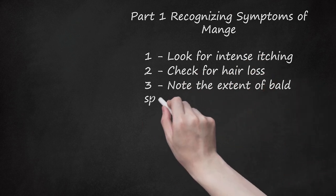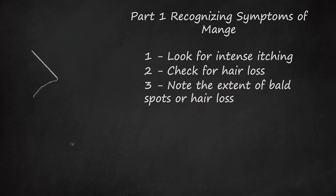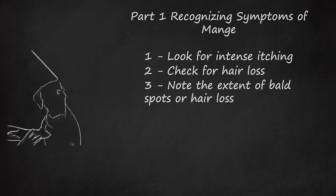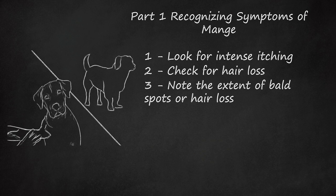Note the extent of bald spots or hair loss. If a case of localized demodectic mange does not go away on its own, it may eventually spread to the rest of the dog's body, resulting in generalized mange. The dog will develop numerous thin or bald patches over its body. Existing patches may grow to about 1 inch (2.5 cm) in diameter. The skin in the patches may become red, scaly, and/or crusty. This skin irritation can cause the dog to scratch at its skin, which can sometimes lead to more serious infections.